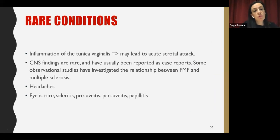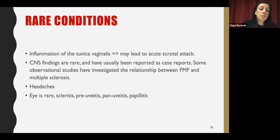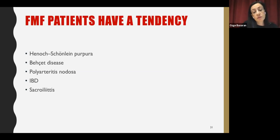Rare conditions include inflammation of the tunica vaginalis leading to acute scrotal attacks. CNS involvement is very rare — there are case reports and observational studies investigating the relationship between FMF and multiple sclerosis. Patients can have headaches during attack periods. Eye involvement is also very rare; some patients can have uveitis or papillitis. FMF patients have a tendency toward vasculitic syndromes like Henoch-Schönlein purpura, Behçet disease, or polyarteritis nodosa, and also inflammatory bowel disease and sacroiliitis.